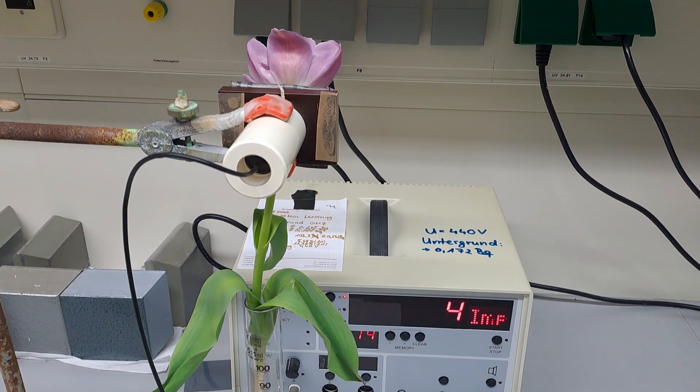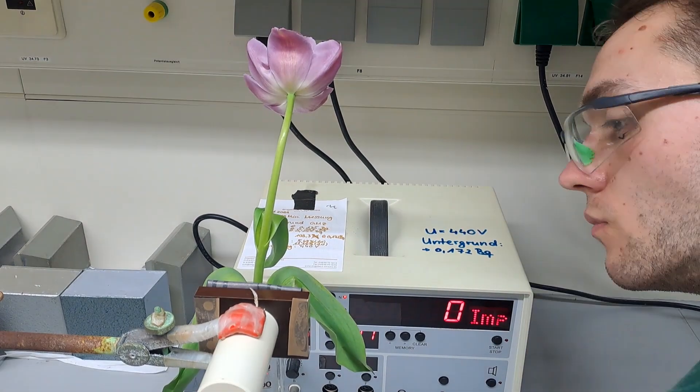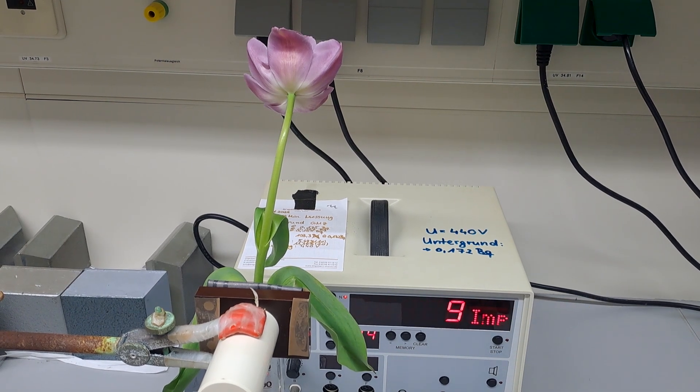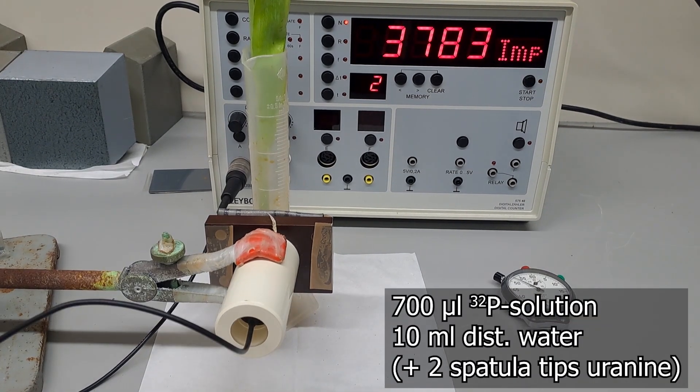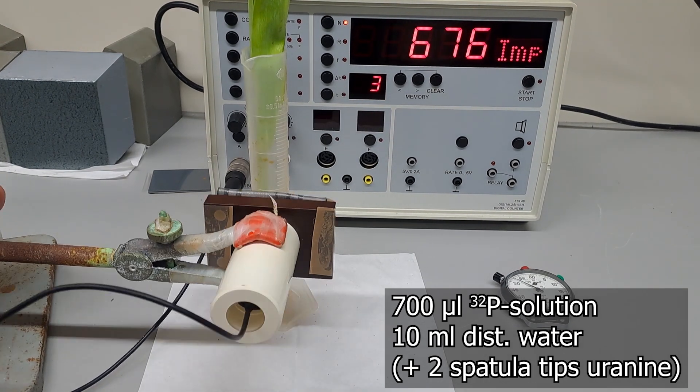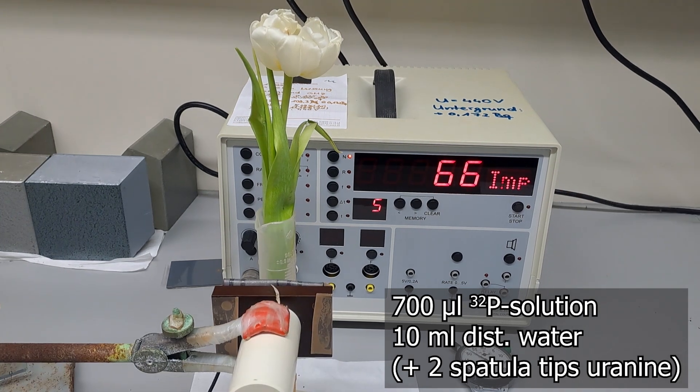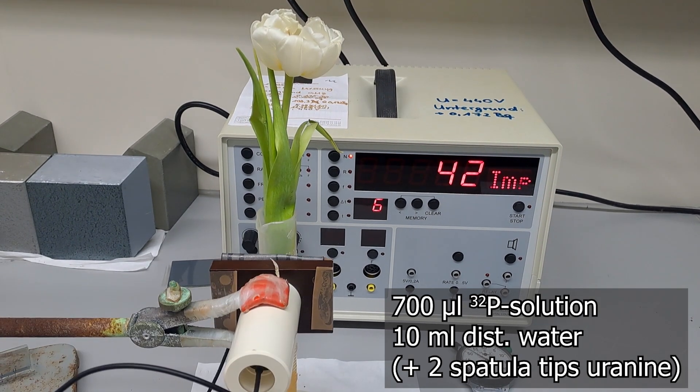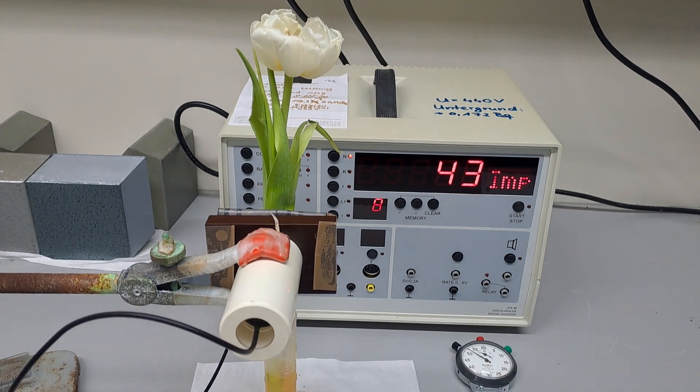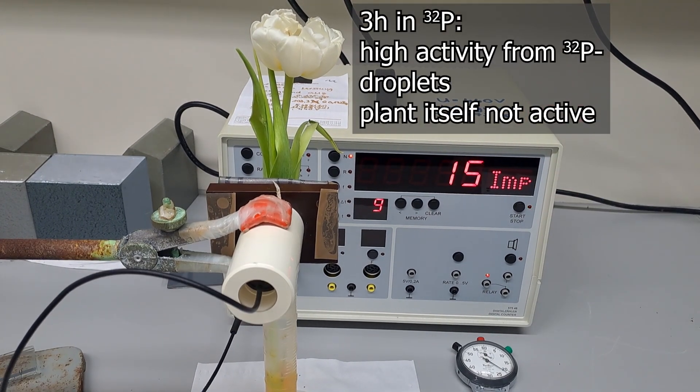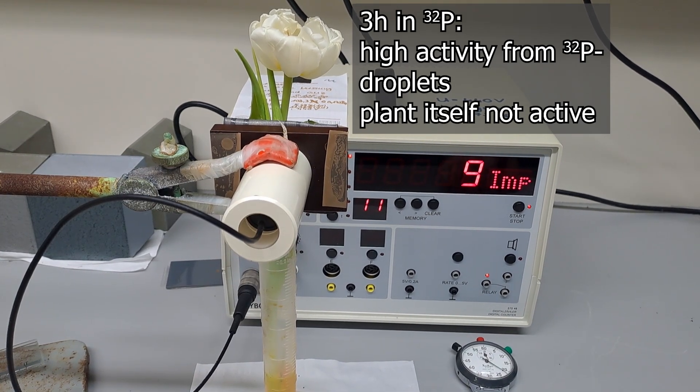There was no significant activity measured in the flower. The activity detected likely came from active droplets left on the inner wall of the cylinder. I tried again with a new flower and a much higher phosphorus-32 concentration: 700 microliters in 10 milliliters of water alongside two spatula tips of uranine, a fluorescent dye. We wanted to see what spreads more easily in the plant, but that didn't work out. Still had a nice effect for future experiments.